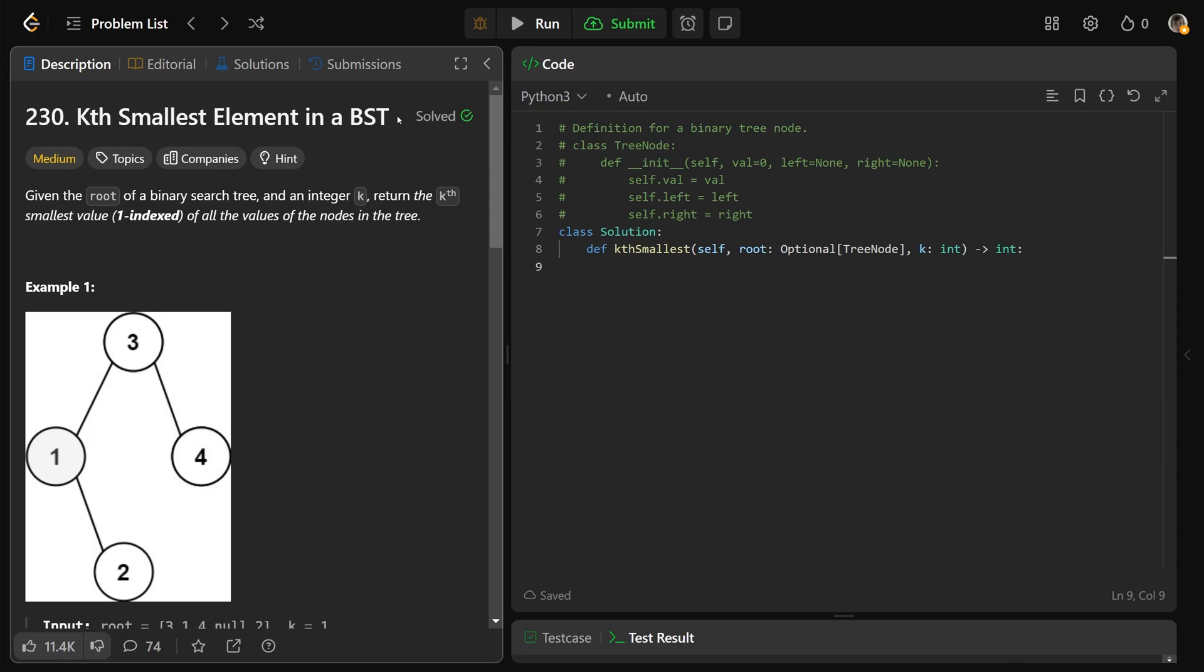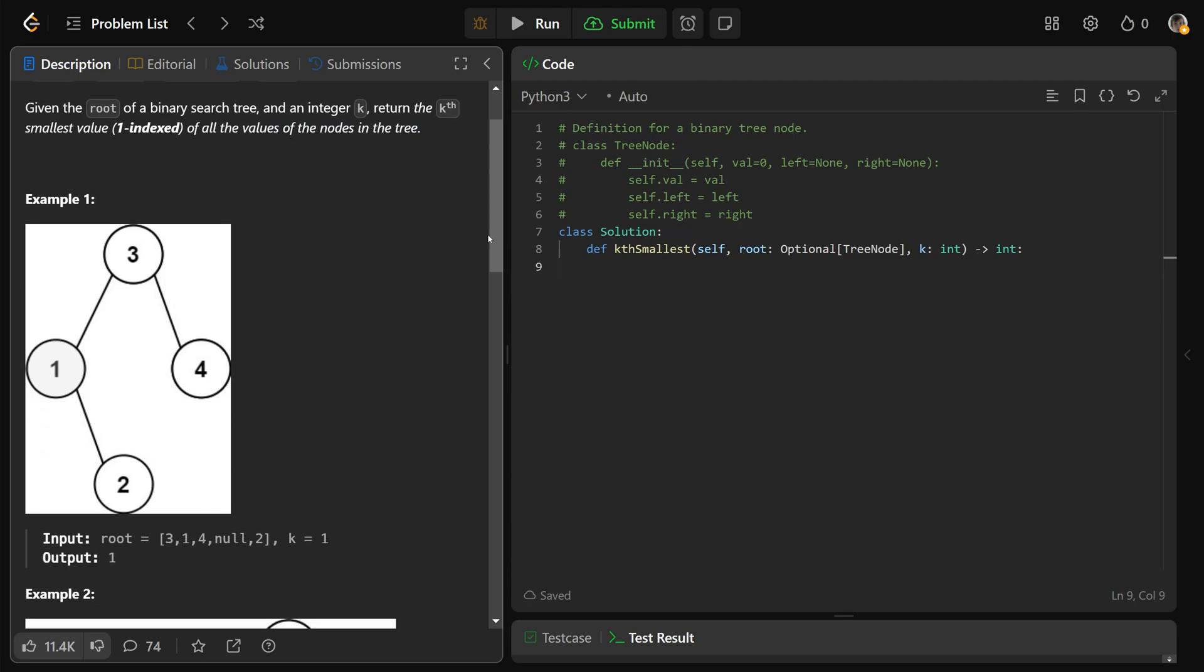Hey guys, Greg here. Let's solve kth smallest element in a BST, LeetCode number 230. So we're given the root of a binary search tree and an integer k. Now we need to return the kth smallest value, one indexed, of all the values of the nodes in the tree.